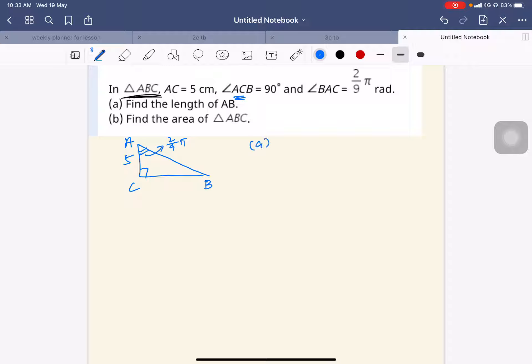So I'm supposed to find AB. I will use SOHCAHTOA since this is a right angle triangle. So I'm using 2 over 9 pi. So AC is the adjacent and AB is the hypotenuse. So cosine 2 over 9 pi is adjacent over hypotenuse.